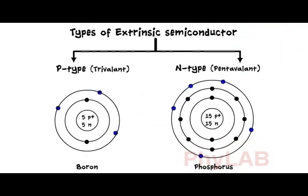Now let's look at the second type of extrinsic semiconductor, the n-type or pentavalent semiconductor. In this, the atomic structure of the n-type or pentavalent semiconductor will have five electrons in the outermost shell.